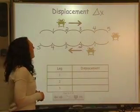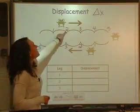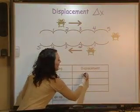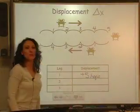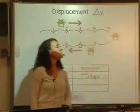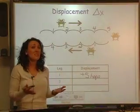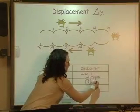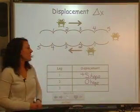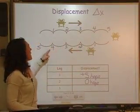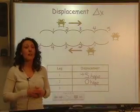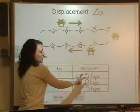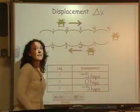Let's analyze Sam's motion. In leg number one, Sam went five hops forward, so we say that his displacement is plus five hops — always include your unit. In leg number two, Sam just sat and looked around. He wasn't going forward or backwards, so Sam's displacement is zero hops. And in leg number three, Sam took five hops back to where he started, so his displacement was negative five hops. He went forward — positive number. If you don't go forward or backwards, it's zero. And if you go backwards, it's a negative number.